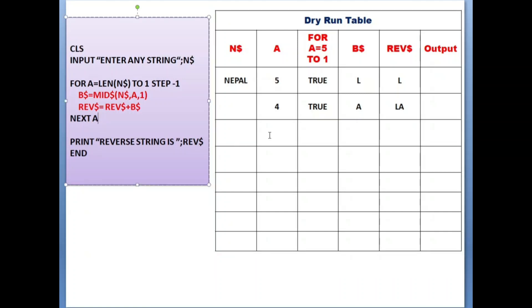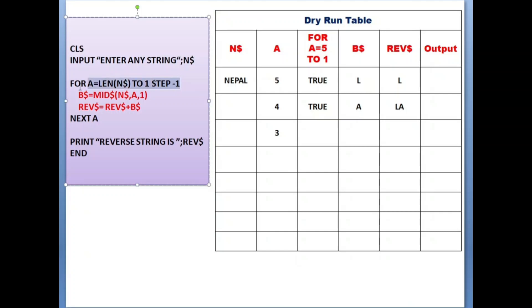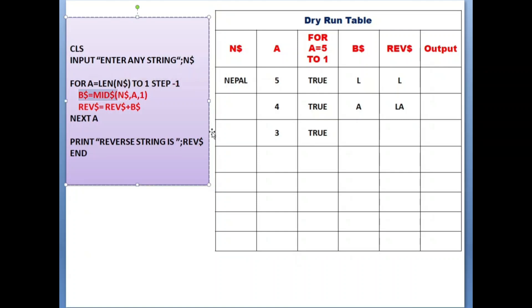Next, NEXT A means decrement the value of A by 1 - step minus 1 - so value of A will be 3. After value of A is decremented it checks the condition: is 3 in the range of 5 to 1? Yes, it is true again. When true it goes inside the loop. B$ equals MID$(N$, A, 1). From the 'Nepal' string, starting from position A which is 3, from the third position - that is P - only one character. So P will be the value of B$. Now REV$ equals REV$ plus B$. REV$ has 'LA' plus B$ which is P - so REV$ becomes 'LAP'.